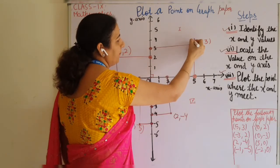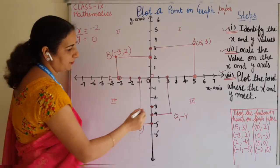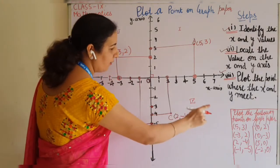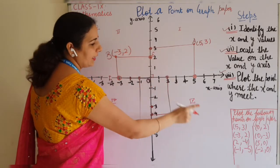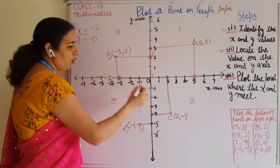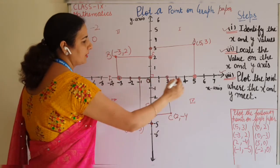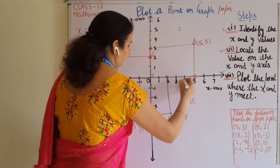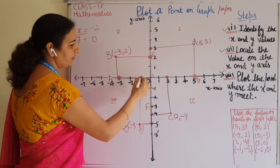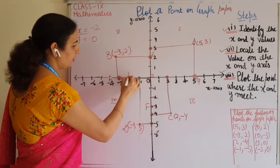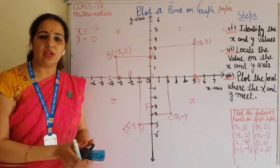Now you should label these points. The first plotted point (5, 3) is point A, then (-3, 2) is point B, (2, -4) is point C, (-1, -5) is point D. Then (0, 2) is point E, (0, -3) is point F, (5, 0) is point G, and (-2, 0) is point H. These are the names of all the plotted points.